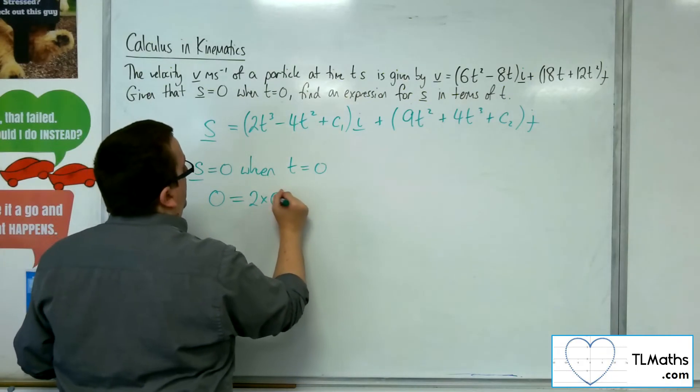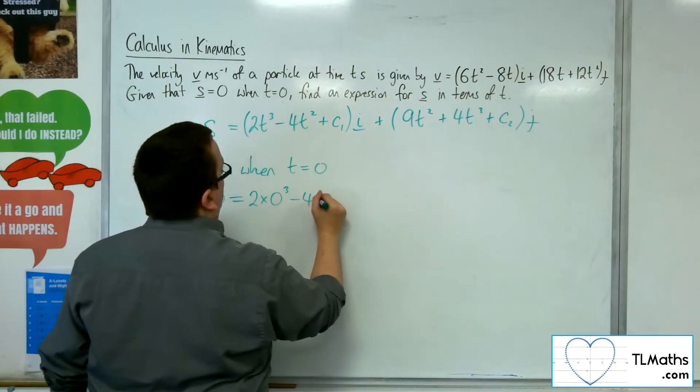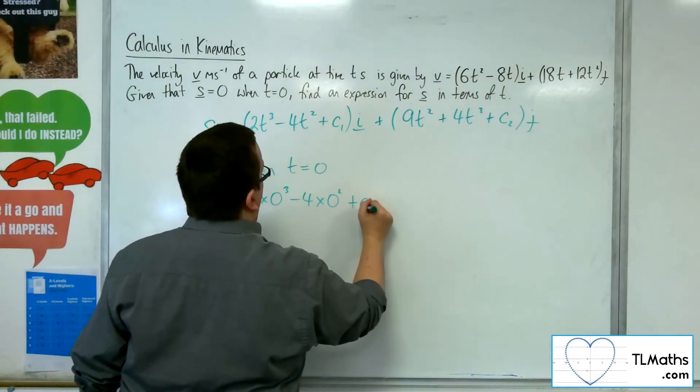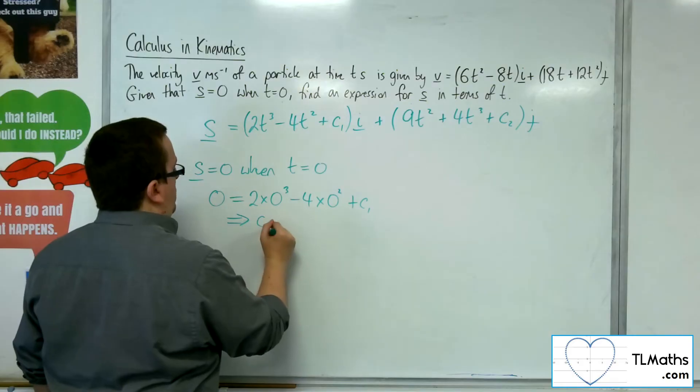So 2 lots of 0 cubed, take away 4 lots of 0 squared, plus c1. So that means that c1 is 0.